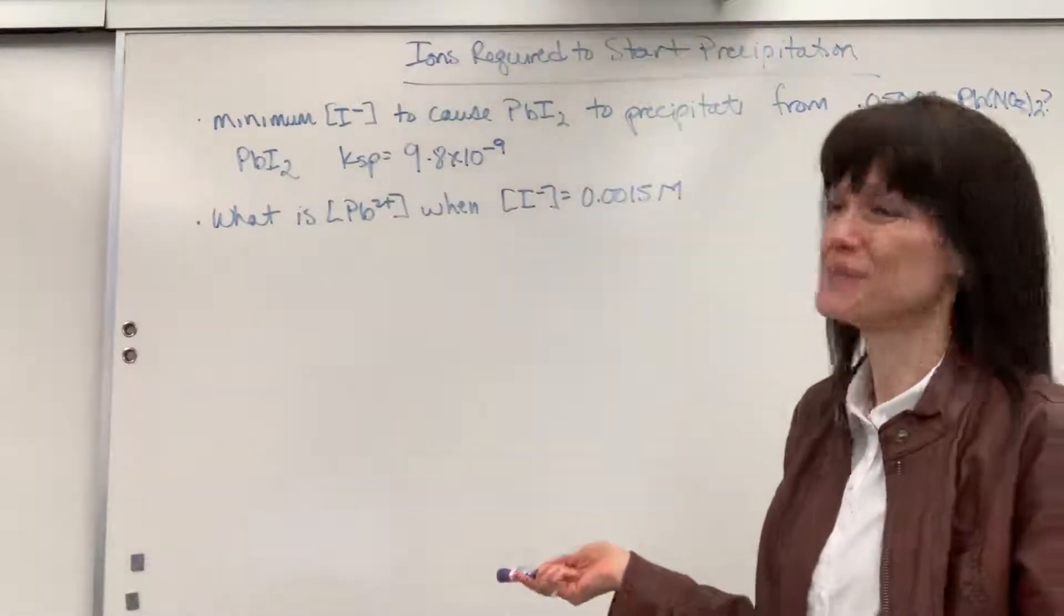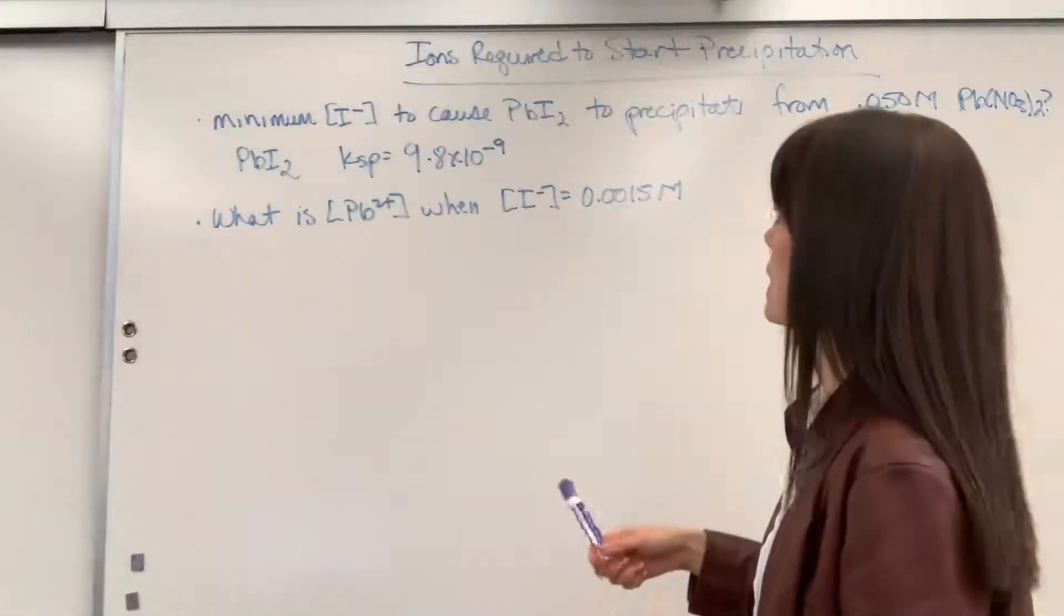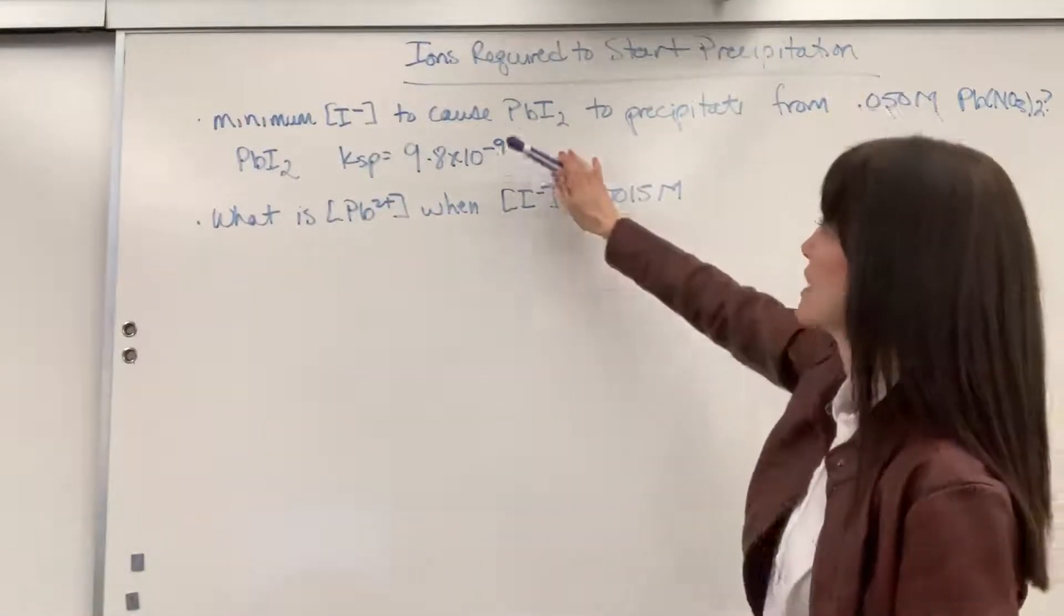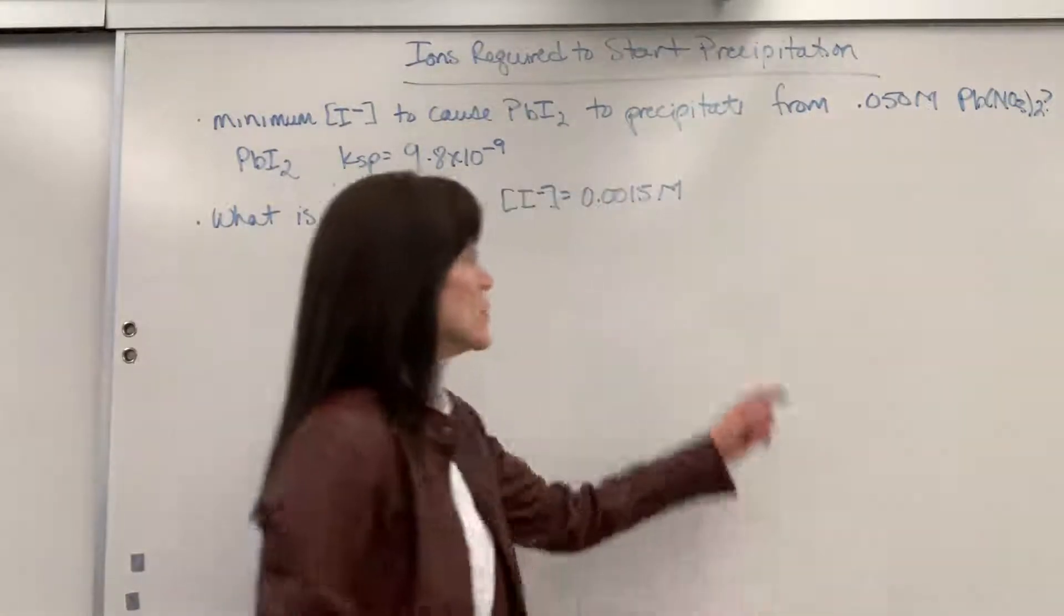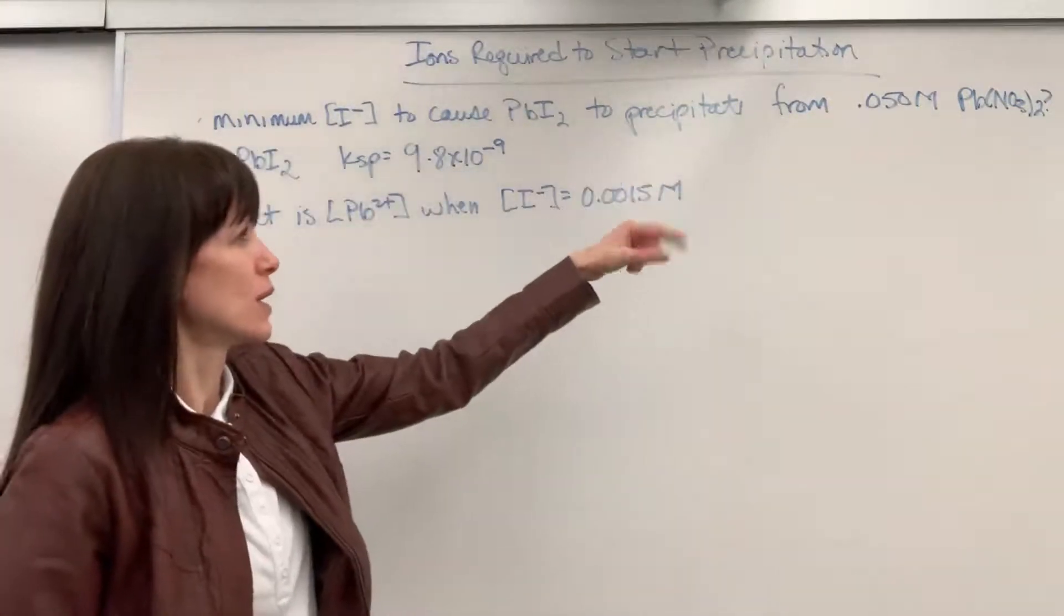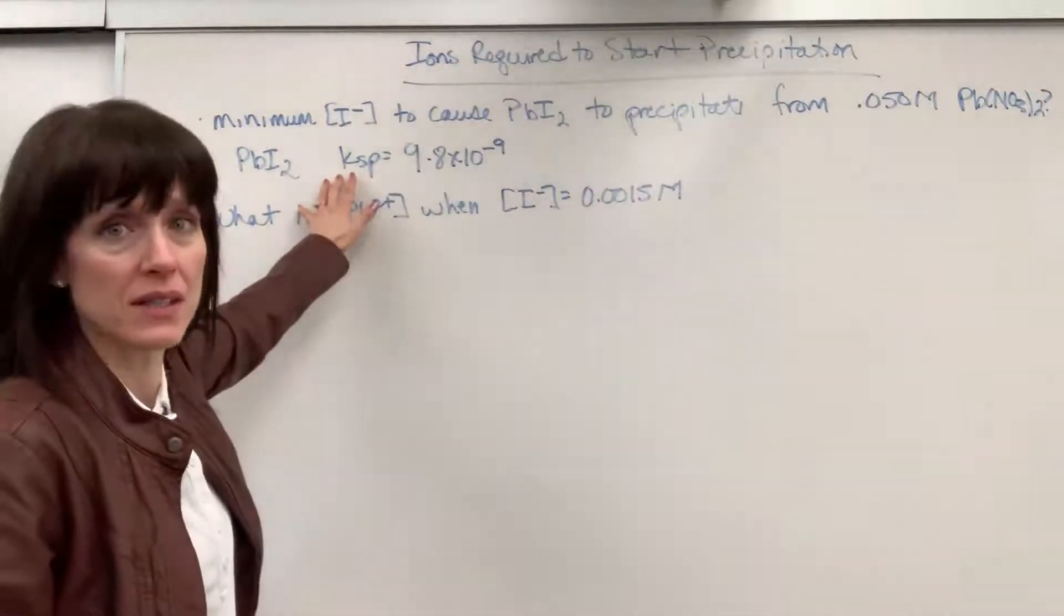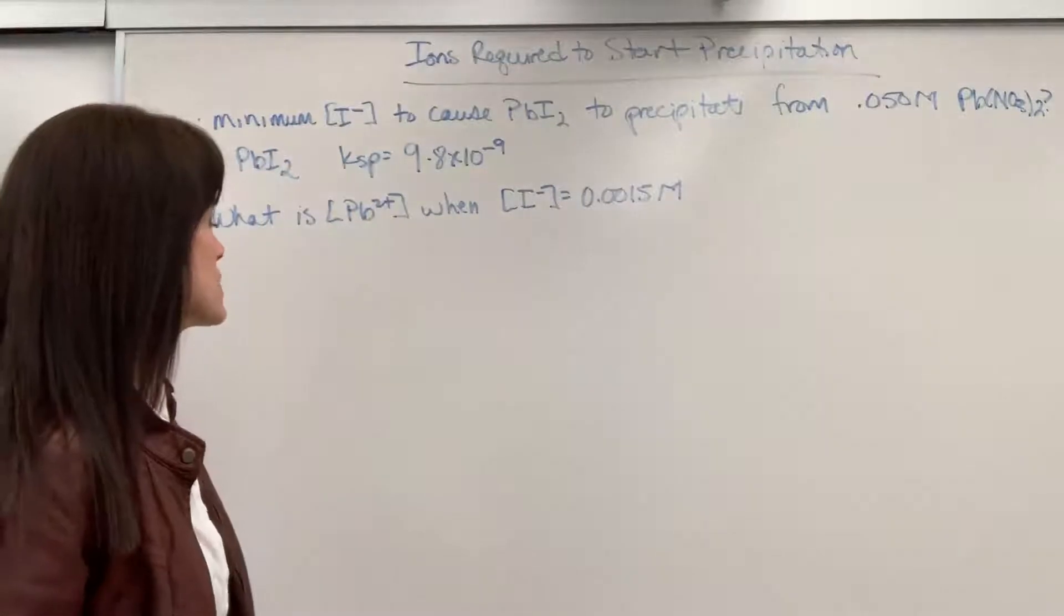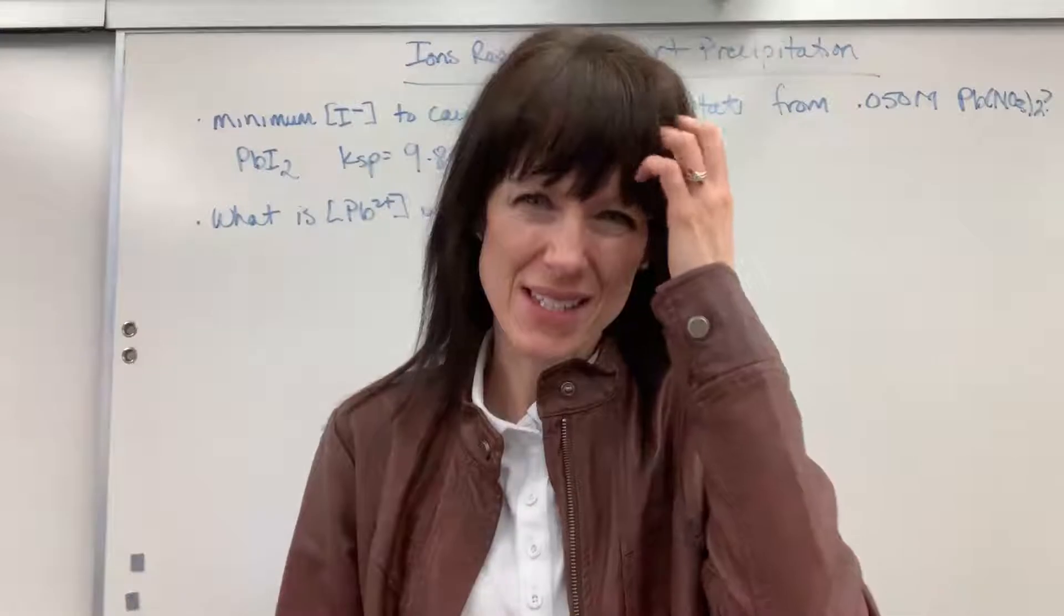So here's our question. They want to know, what is the minimum concentration of this iodide ion to cause lead iodide to precipitate from a 0.5 molar lead nitrate? They do give us the KSP of the lead iodide. That KSP is 9.8 times 10 to the minus 9. First thing that I do when I read this is I try and visualize it.